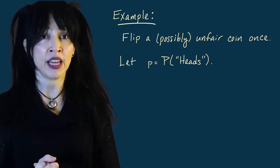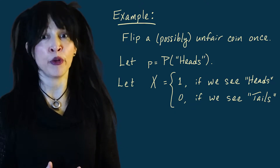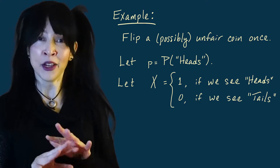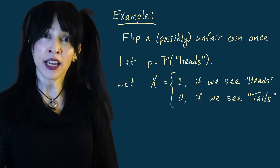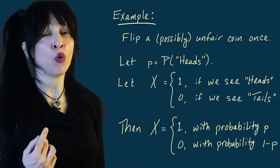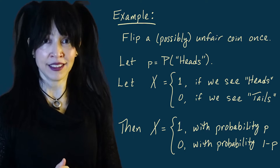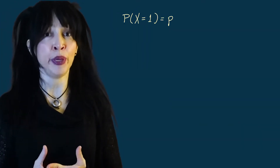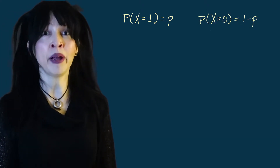Defining X to be one or zero depending on whether we get heads or tails, we can rewrite X by taking the coin out completely and just talking about probability. My random variable capital X will take on the value one with probability little p, and zero with probability one minus p. So the probability that X equals one is little p by definition, and the probability that X equals zero is one minus p.